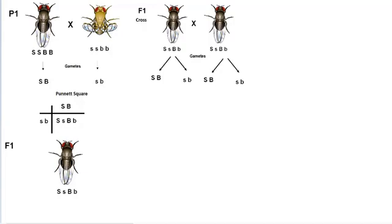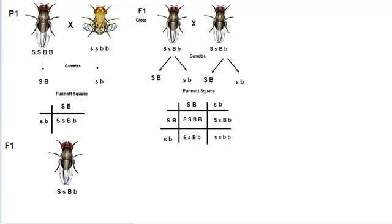So why do we only get two different gametes instead of four? This is because the genes are on the same chromosome, so they do not separate. Let's plug these gametes into a Punnett square and we get two different phenotypes.